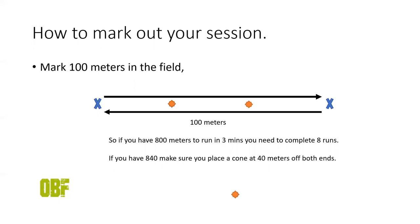If you have to do 840, I would recommend you come in 40 meters off both ends and just put a marker there. That essentially means if you were starting from left to right you would do your eight runs and then you just meet your center 40 meter mark and you have your 840 done.